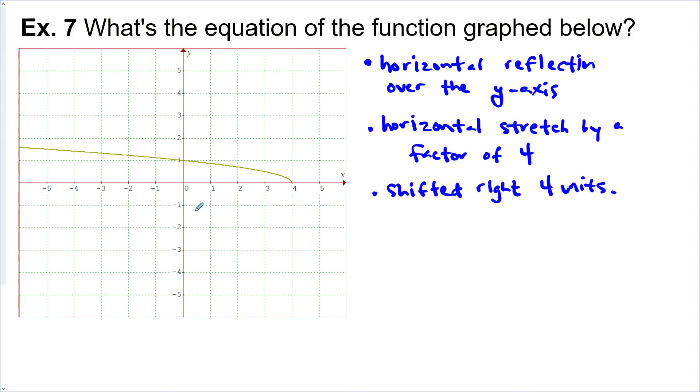We also shifted right four units. And that looks like all the transformations. Let's put it together into an equation. We've got y equals. This is horizontal, horizontal, and horizontal. So everything's going to be inside as we've listed them here. We've got a reflection. We've got a stretch by a factor of four. So we want to put one over four in here. And then in brackets, shifted right, so x minus four.